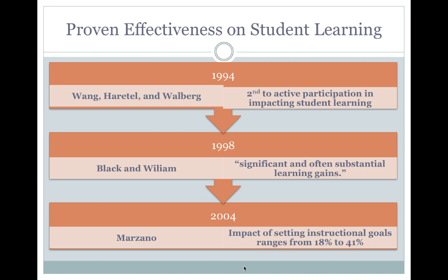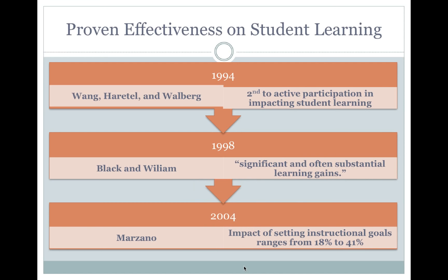In 1998, Black and William concluded from their meta-analysis of more than 20 studies that setting student goals produces significant and often substantial learning gains. Finally, in his meta-analysis of what works in schools, Marzano found in 2004 that the impact on student achievement of setting instructional goals ranges from a low of 18% to a high of 41%.